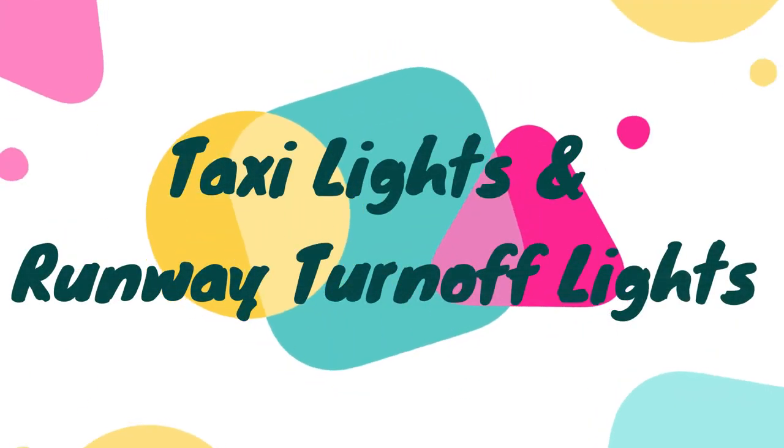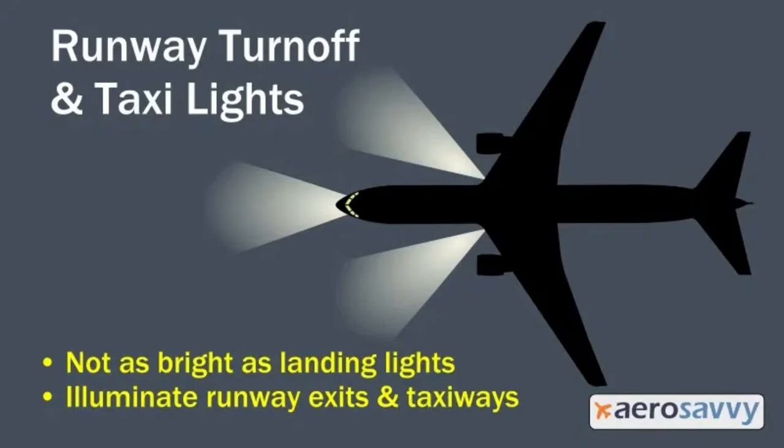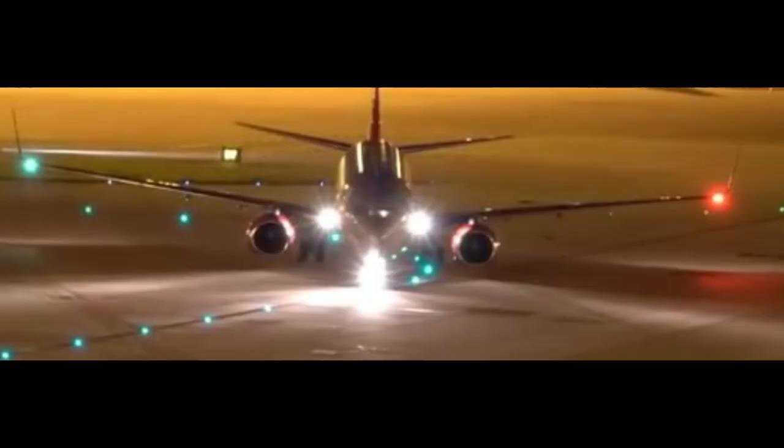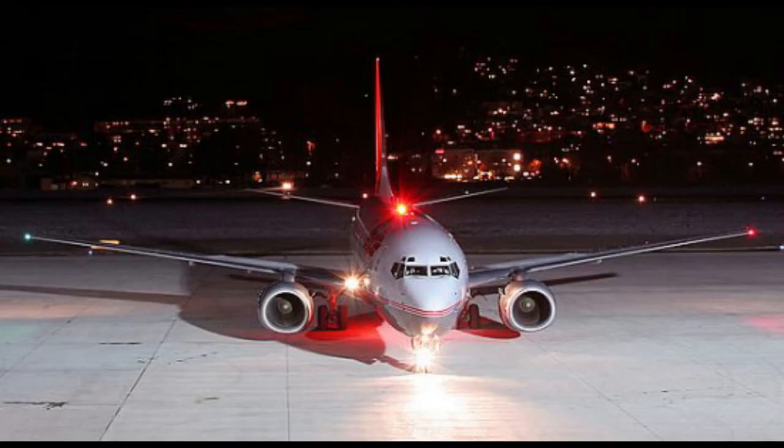Taxi lights: taxi lights are medium intensity lights which may be mounted on the nose landing gear strut, in the aircraft nose, or at the wing roots. They are used to provide illumination of the taxiway during ground operations.